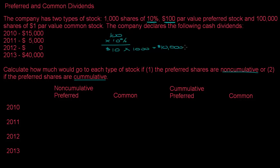So that means when a dividend is paid, whether cumulative or non-cumulative, the first $10,000 is going to go to the preferred shareholders. I like using a table for this because it helps me keep my information organized.